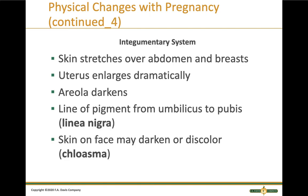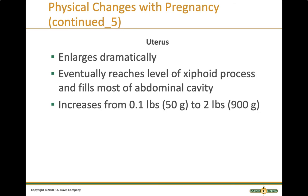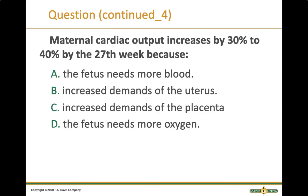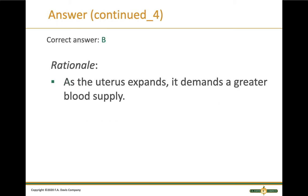In the integumentary system, the abdomen and breasts grow rapidly, stretching the skin and causing stretch marks. The areola darkens, and there may be a line of pigment from the umbilicus to the pubis. The skin on the face may darken or discolor. The uterus enlarges dramatically, reaching the level of the xiphoid process and filling most of the abdominal cavity — it increases from 50 grams to 900 grams, an 18-fold increase. Maternal cardiac output increases by 30 to 40 percent by the 27th week because the expanding uterus demands a greater blood supply, which is also going to the baby.